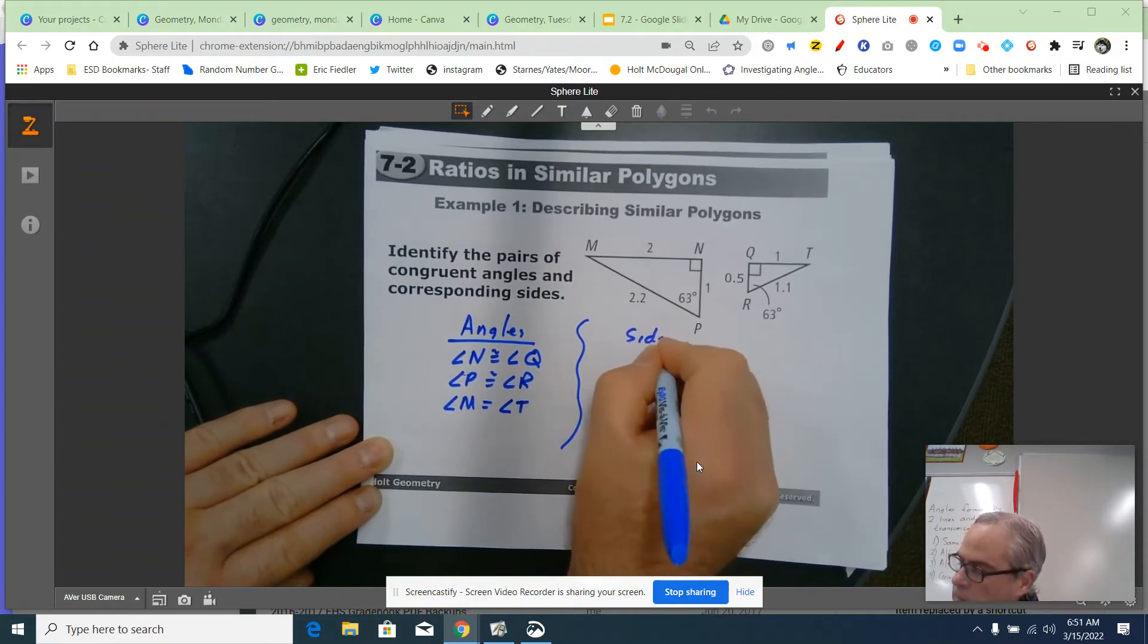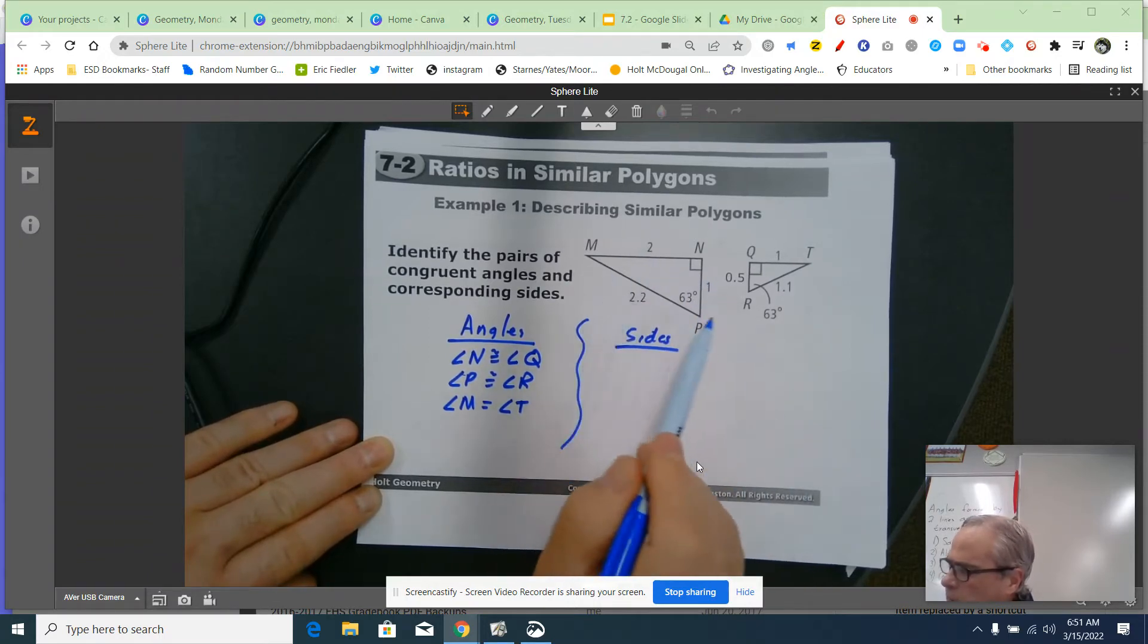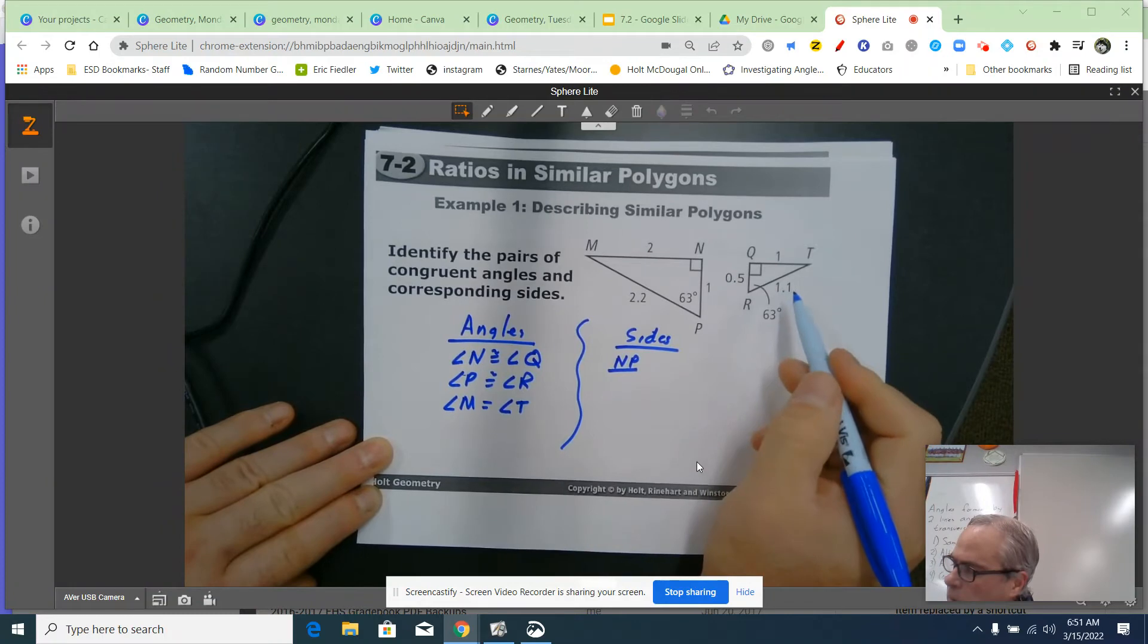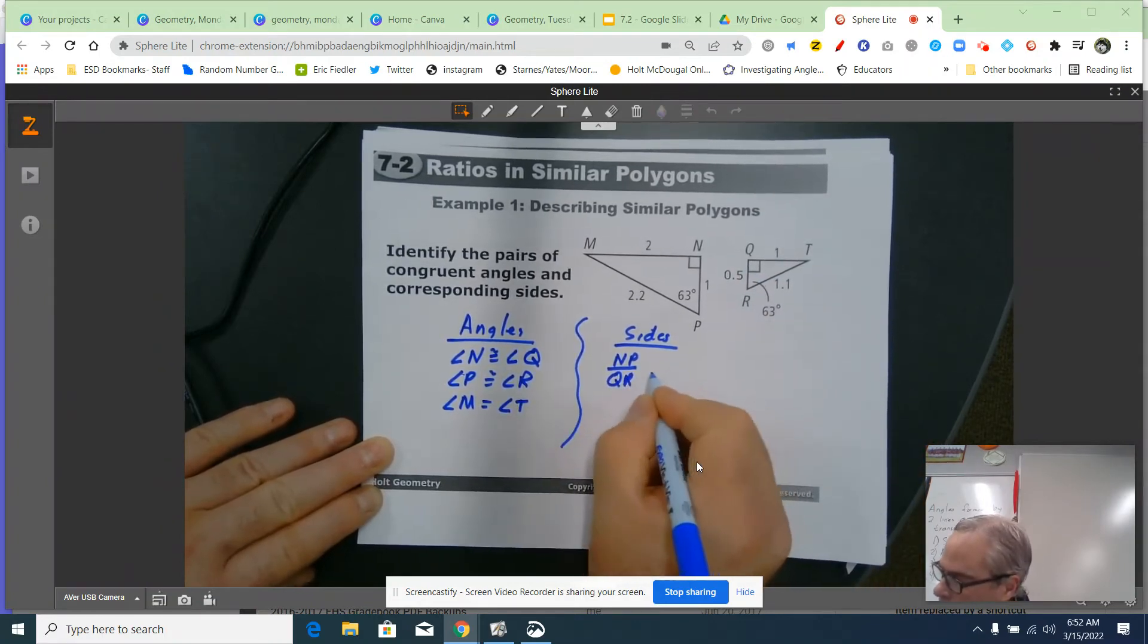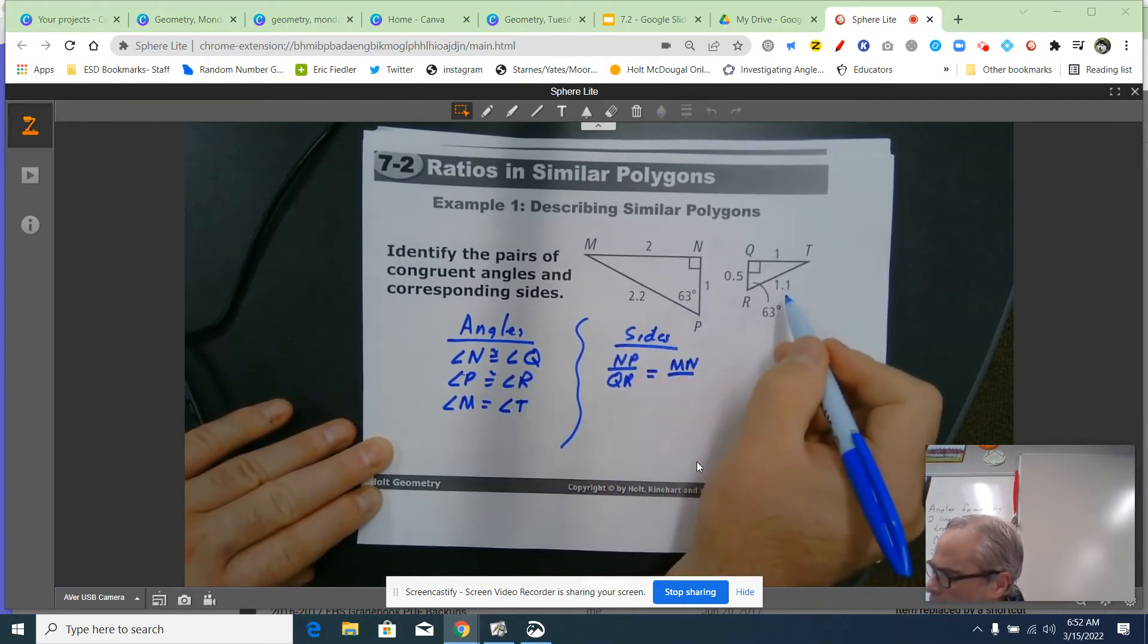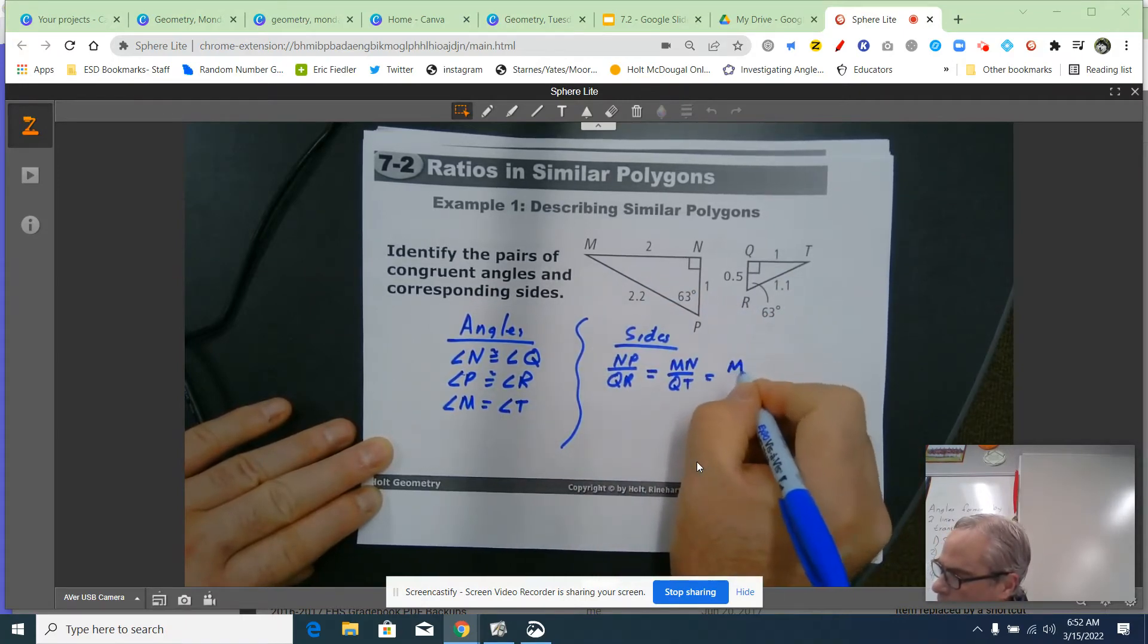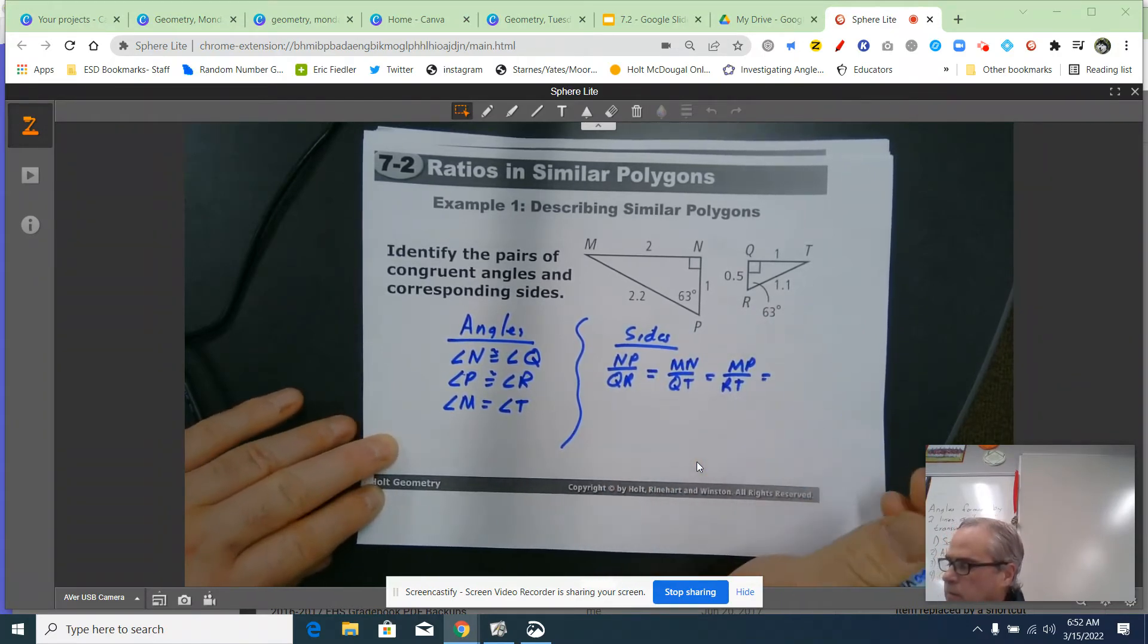Here's the second piece, sides. They have to be in the same proportion. So let's see. On the triangle on the left, the shortest side is 1, or NP. The shortest side in the triangle on the right is 0.5, which is QR. That would have to be equal to the middle side, which is MN, and the middle side over here is QT. The longest side is MP, that's the hypotenuse, right? Over the longest side over here, which is RT. And those had all better be the same. Let's check them.